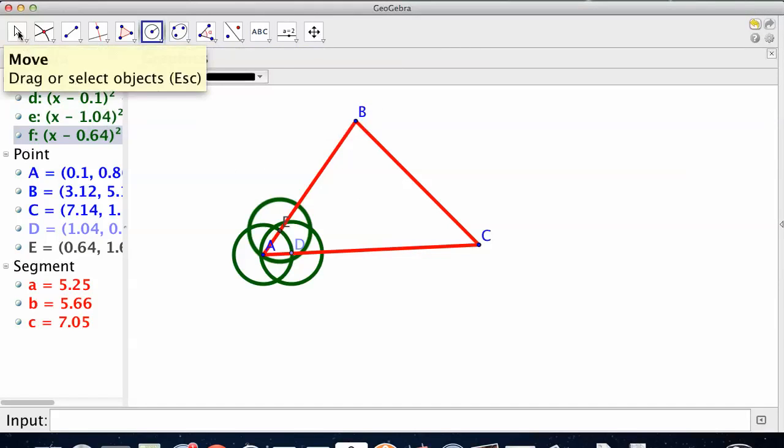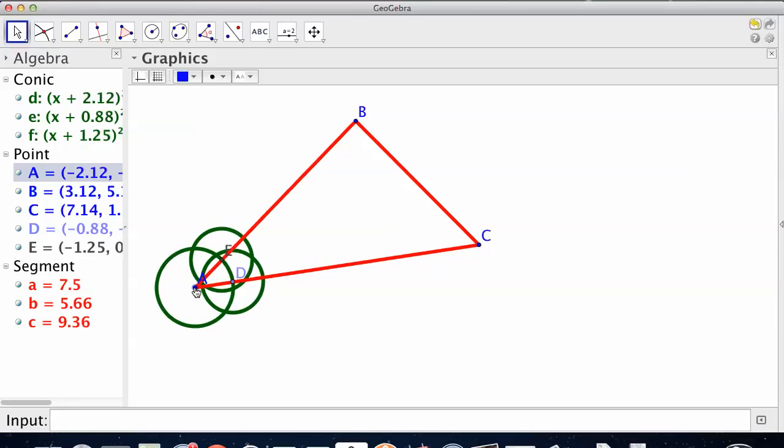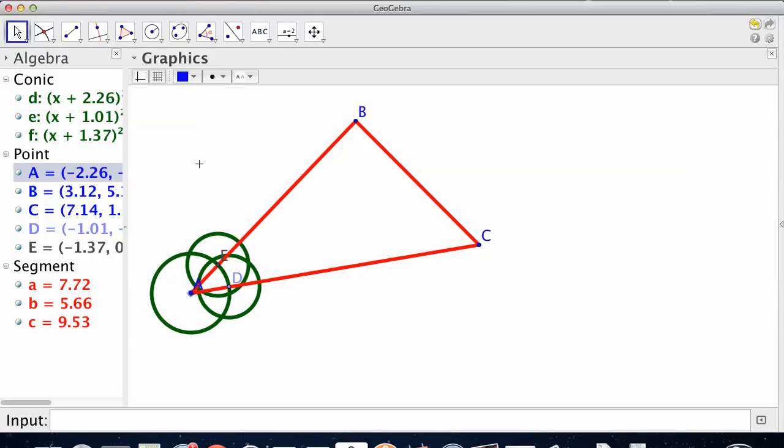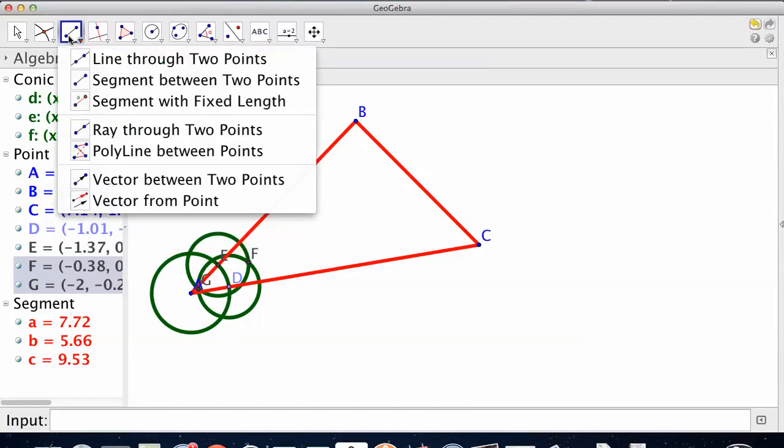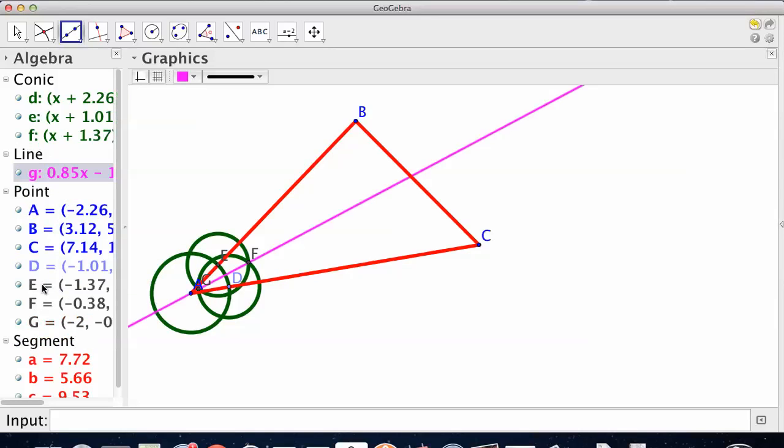And I just want to move things a little bit. Now we need the intersection of those two circles, and we will draw a line through those two, through G and F. F, G. Awesome. It is going through the corner A. There is an angle bisector.